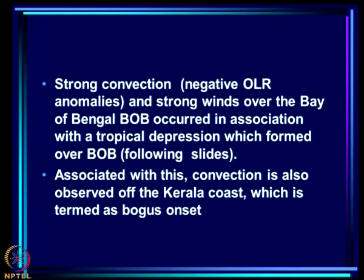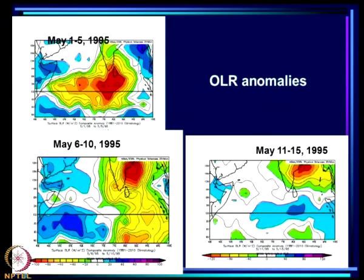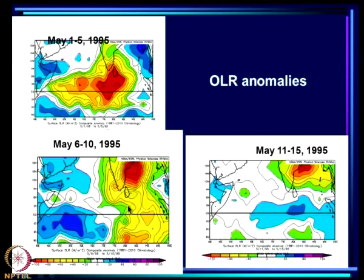During the 1995 bogus onset, strong convection — negative OLR anomalies — and strong winds over the Bay of Bengal occurred in association with a tropical depression. From May 1–5 there was active convection; from May 6–10 the convection disappeared from the original area, moved eastward, and two systems formed — one moving north and one south in the two hemispheres.